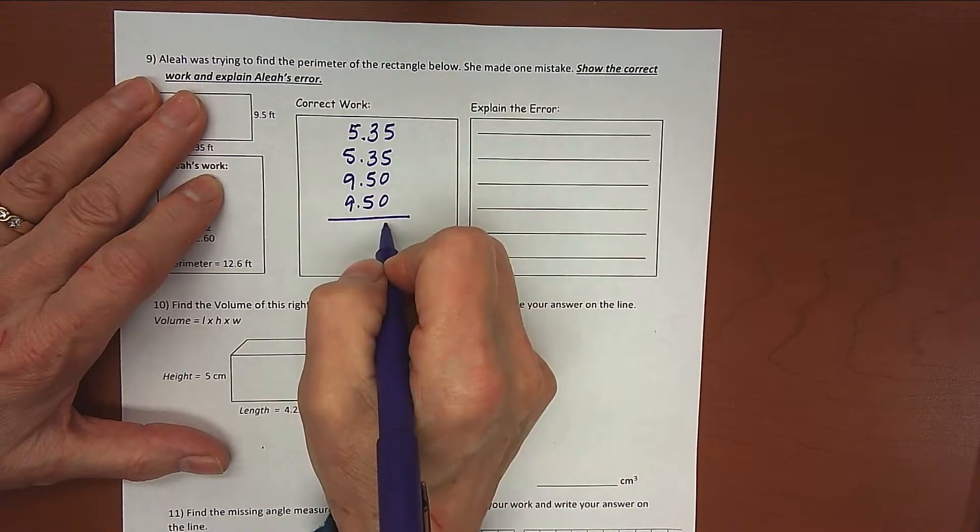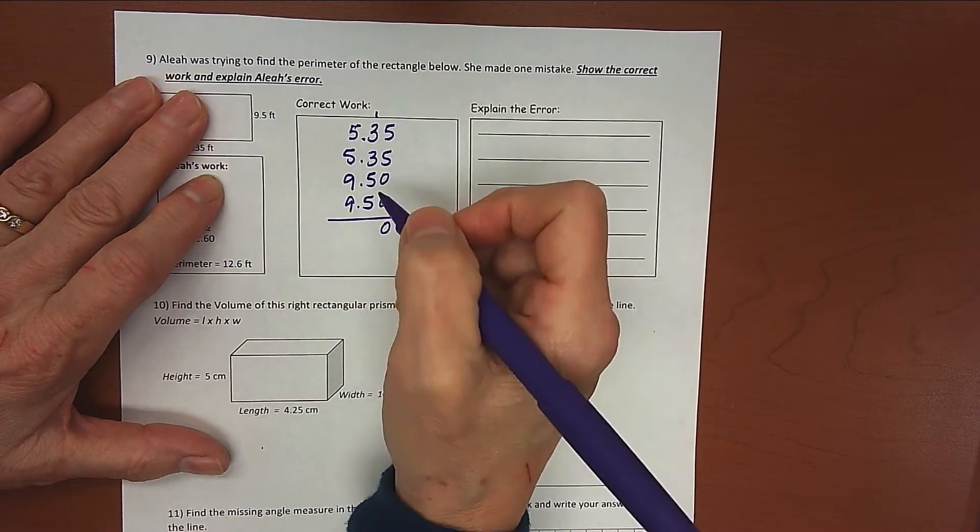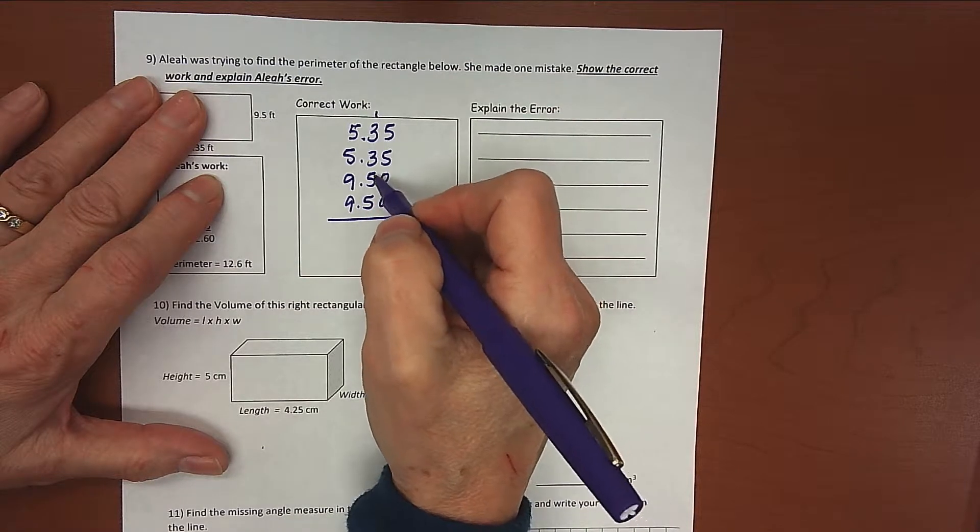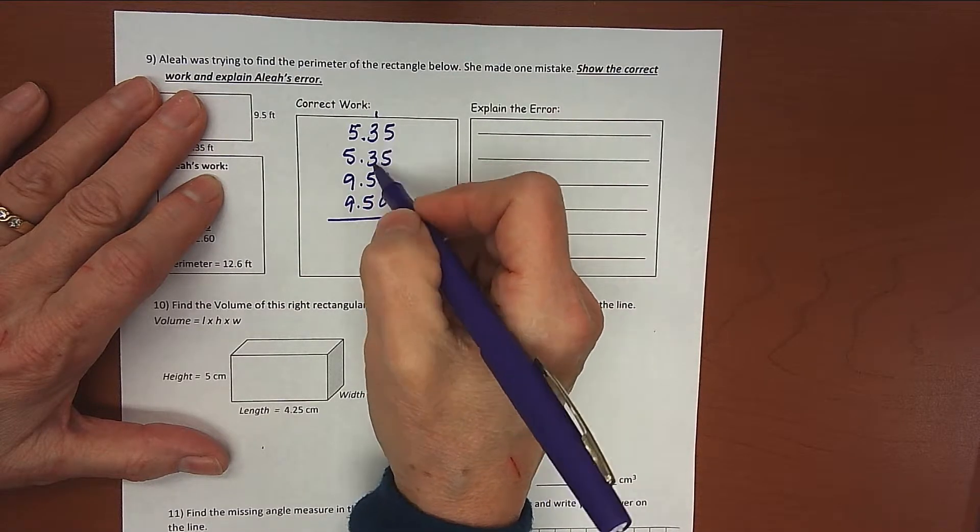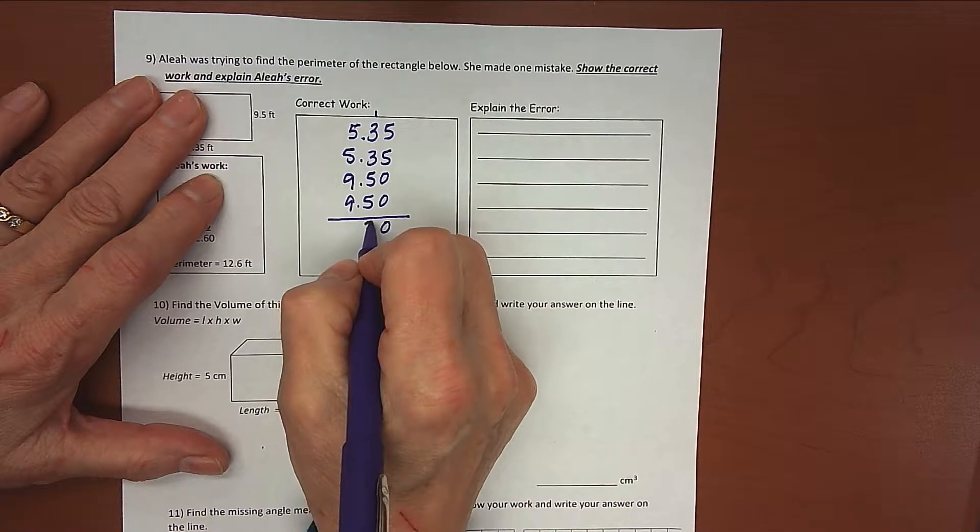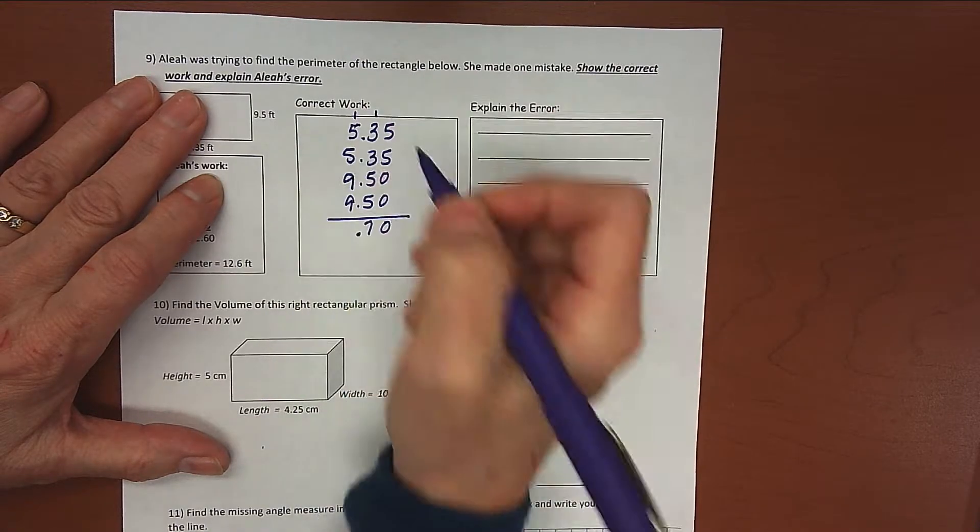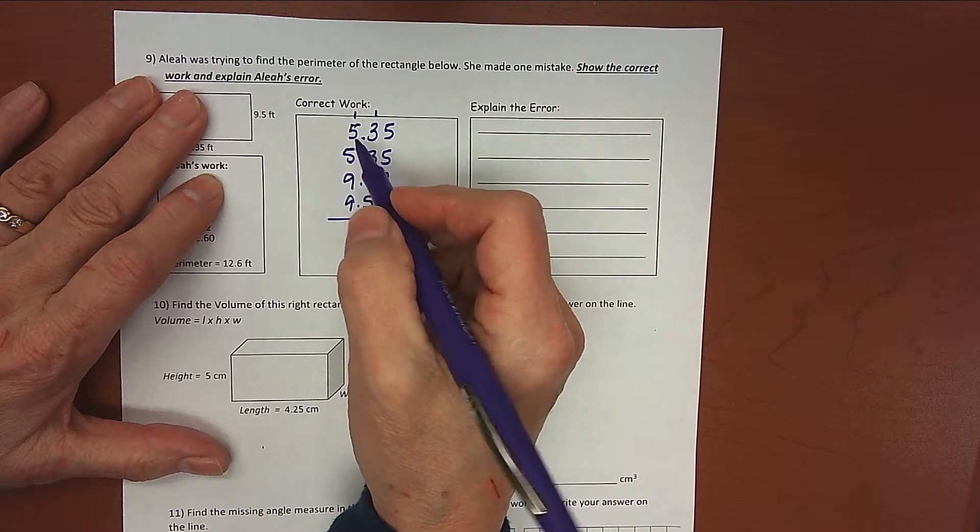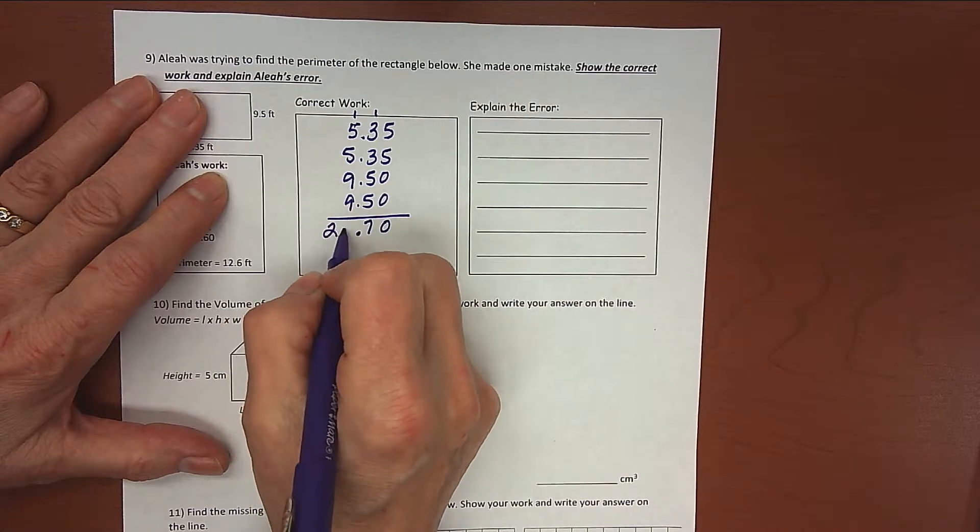5 plus 5 is 10. Put my 0 down, carry my 1. 5 and 5 is 10, and 6 here is 16, and 1 is 17. Put my 7 down, carry my 1. 9 and 9 is 18, and 10, that's 28, and one more is 29.